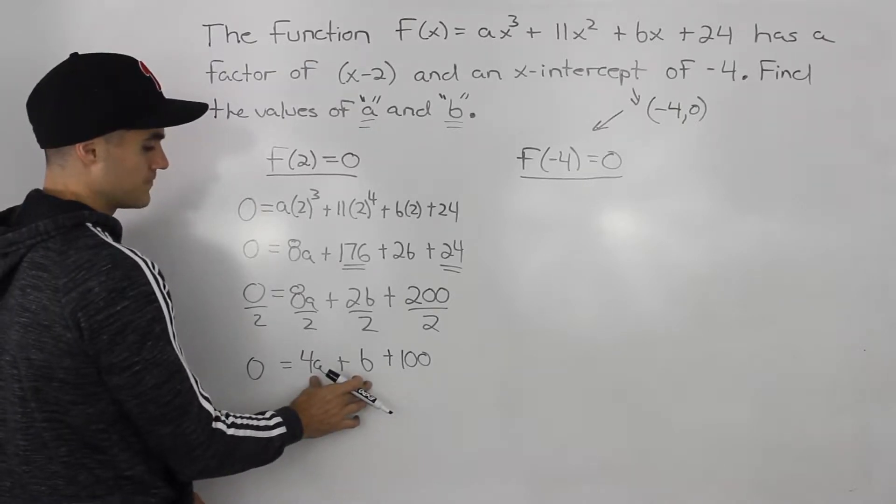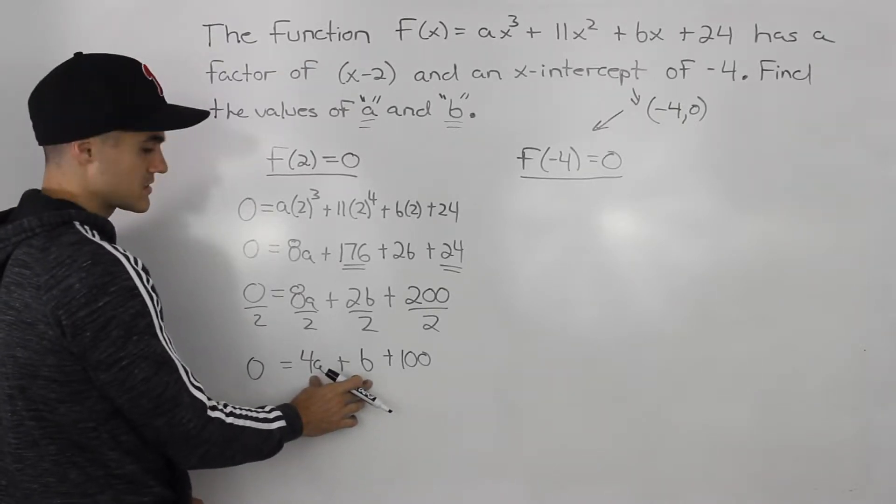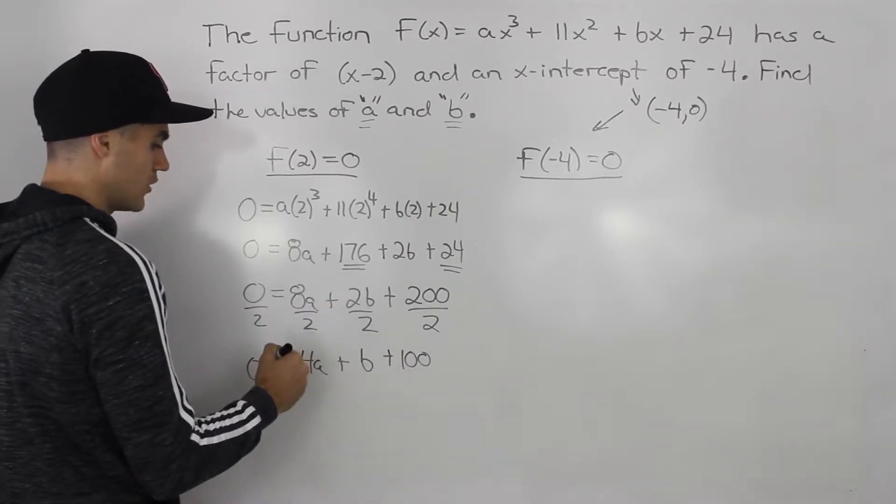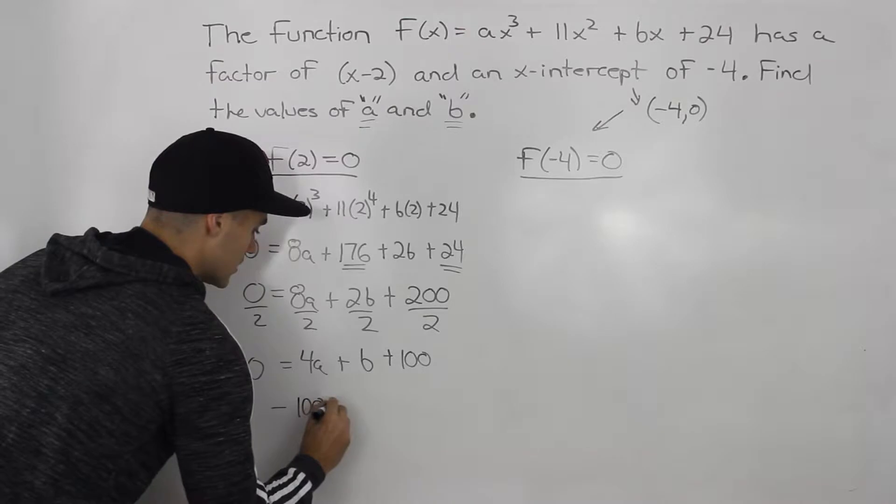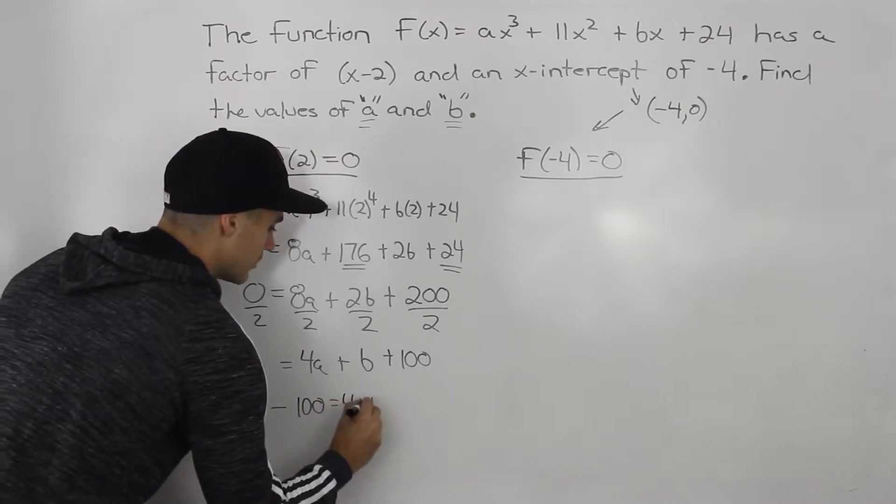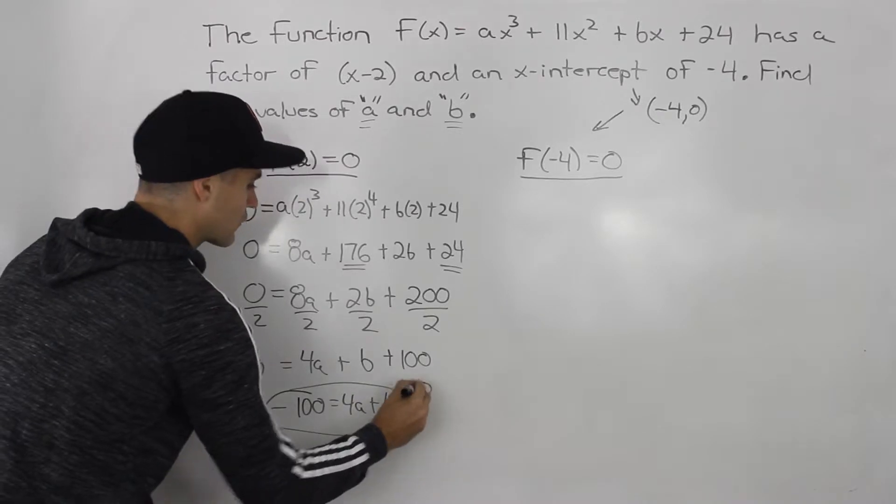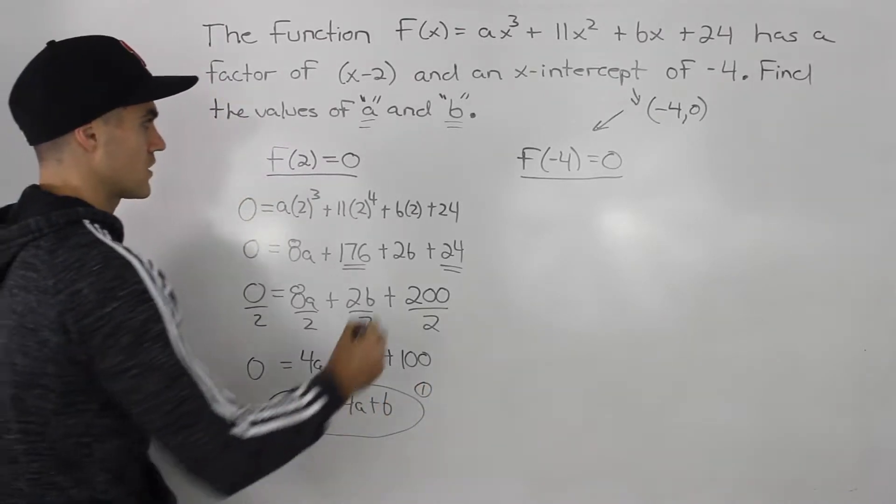So we have 4a plus b plus 100. Let's keep the variables on one side. And then let's bring all the constants to the other side. So if we bring this 100 over, we'd have negative 100 equals 4a plus b. So that there is our first equation that we can work with.